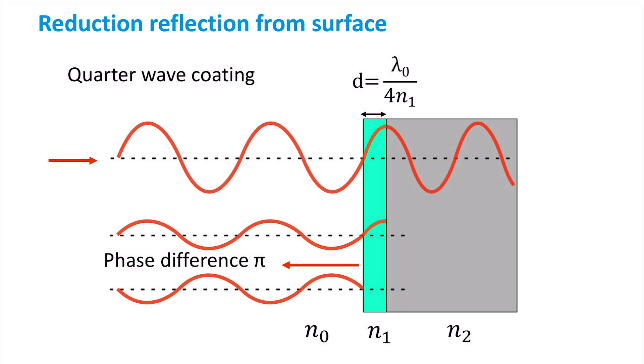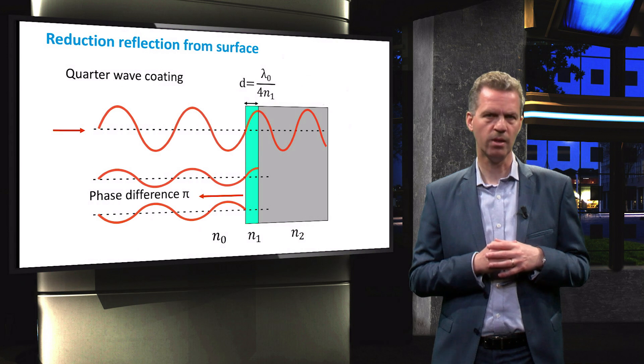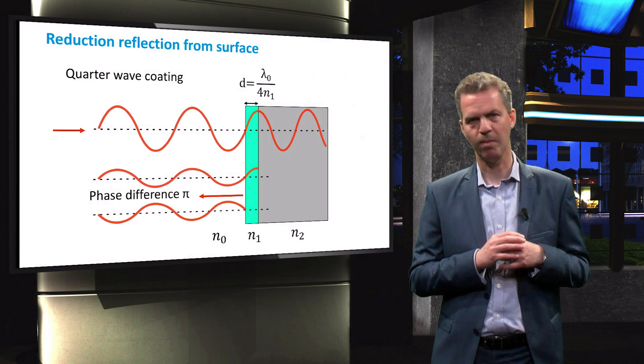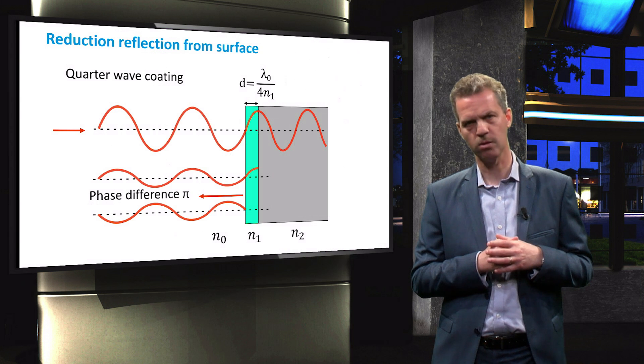Please note that the destructive interference is only occurring for a small wavelength range. For solar cell applications, this range is most commonly chosen around the maximum spectral power density of the solar spectrum, which is around 500 nm for terrestrial applications.